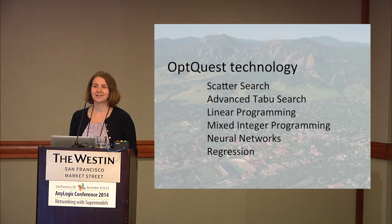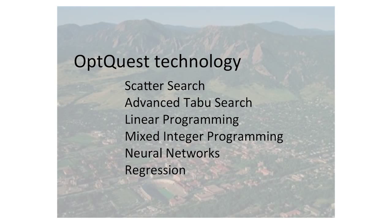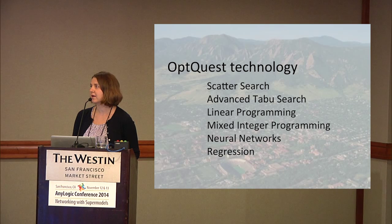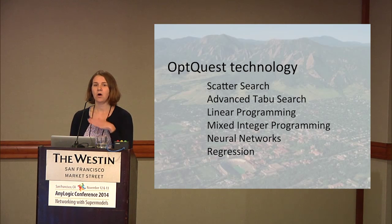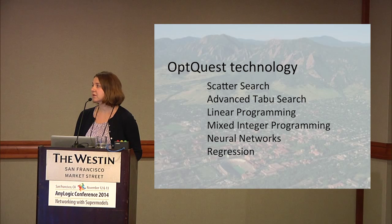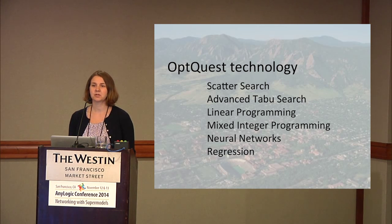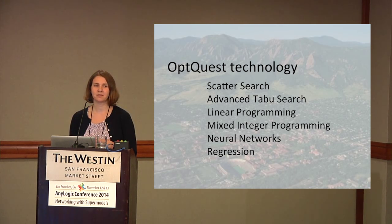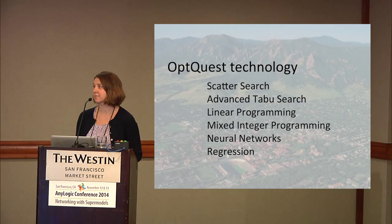A little bit about the OptQuest technology for those interested. Our main technology is a mixture of scatter search and advanced taboo search, and we actually have the inventor of these methods — really the father of meta-heuristics — on our staff. We've found these approaches to outperform any other meta-heuristics like genetic algorithms and simulated annealing across all kinds of different simulation problems. We've also included mixed integer programming and other traditional mathematical programming approaches, really attacking the problem from all directions. We've refined these algorithms for over 20 years.